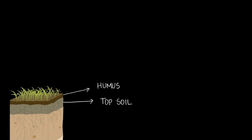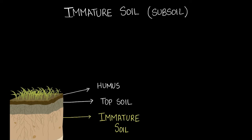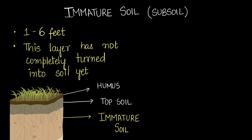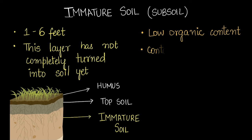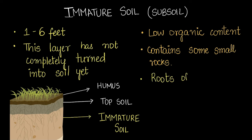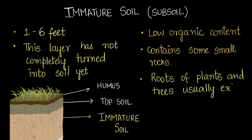The next layer is called the layer of immature soil, also called subsoil. It's 1 to 6 feet deep and has not yet completely turned into soil. It has low organic content because it's far from the humus layer, and it contains some small rocks. The roots of trees don't extend beyond this layer.